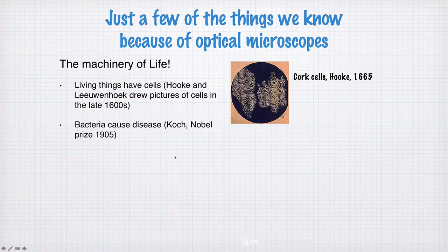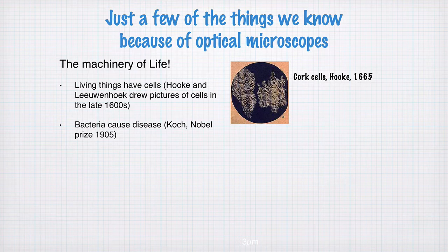We know that bacteria cause disease. Koch won the Nobel Prize for this discovery in 1905 — the idea that single-cell organisms like bacteria can be transmitted and cause disease. This was quite revolutionary at the time.